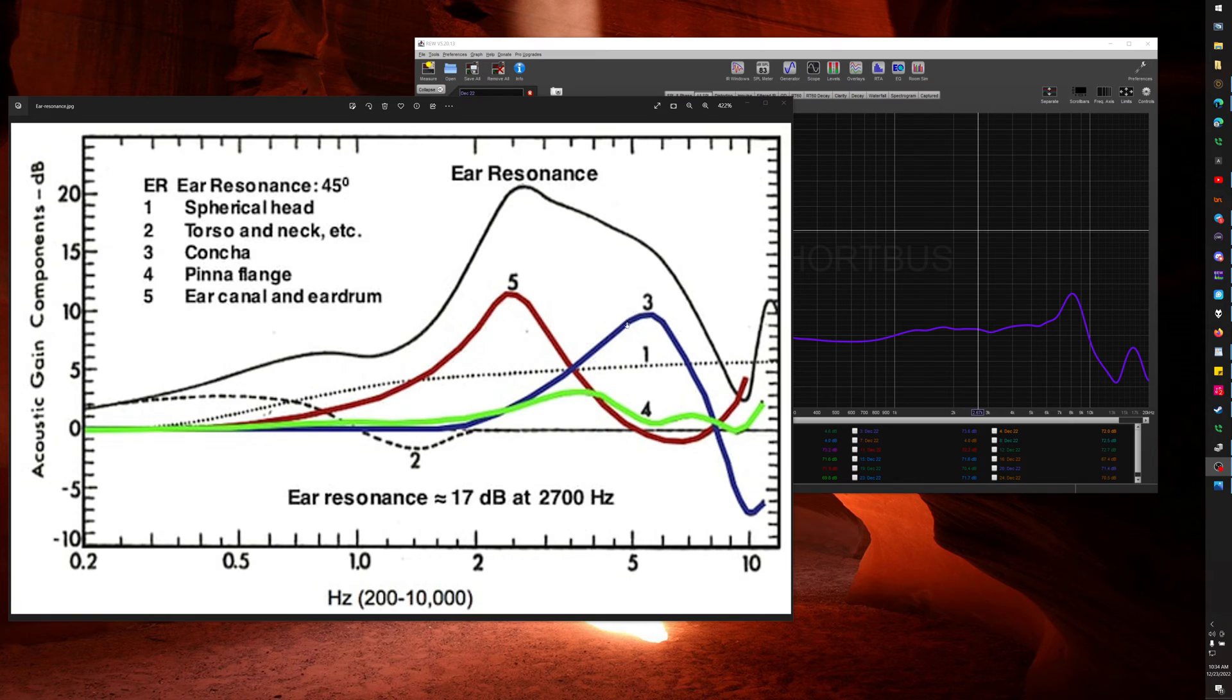And then we have to absolutely exclude the concha because that is removed from the in-ear. Well, it's removed from the gain because it's bypassed with the in-ear. But what isn't bypassed is this number five, right? That's the ear canal and eardrum gain.